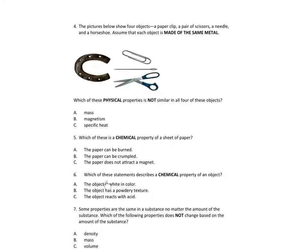Number 6. Which of these statements describes the chemical property of an object? A. The object is white in color. B. The object has a powdery texture. C. The object reacts with acid.